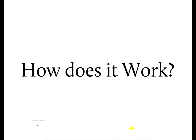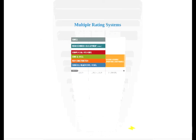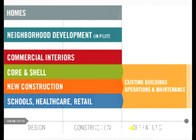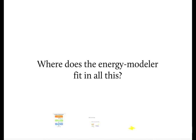Now that we understand the value of LEED, let's see how it works. LEED contains a very large set of rules and requirements. In fact, there are multiple sets of rules based on the building type. We are going to focus on the LEED rating systems that require energy modeling, such as Core and Shell and New Construction. With all of this detail, many people are confused about who does what. Here, we are going to focus on where the energy modeler is involved.